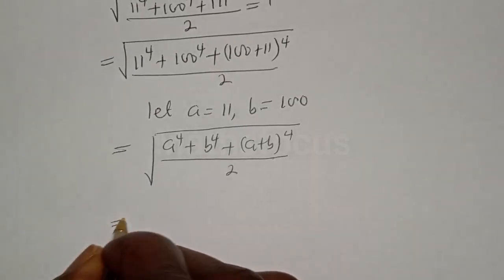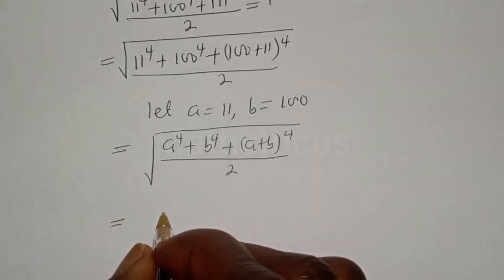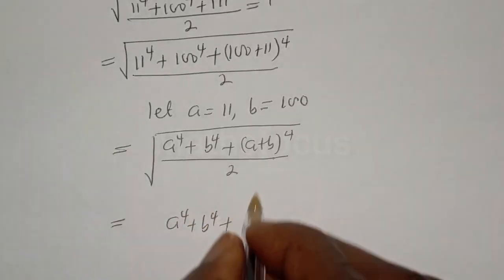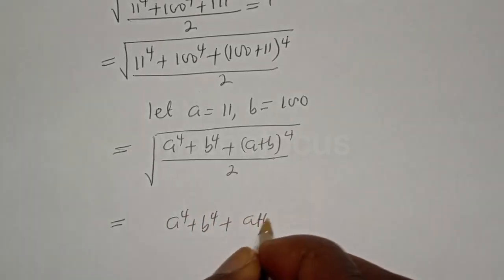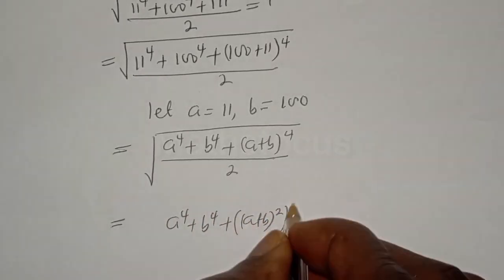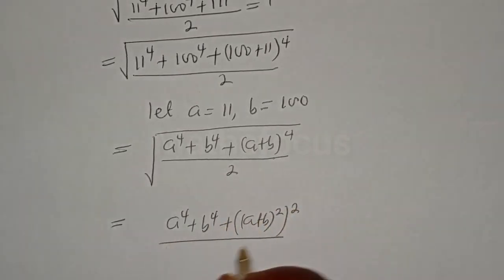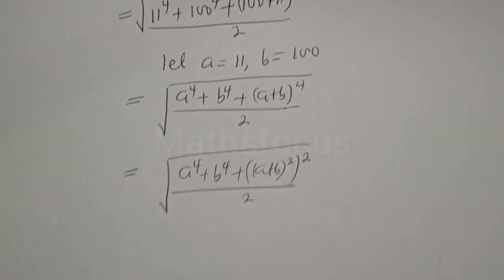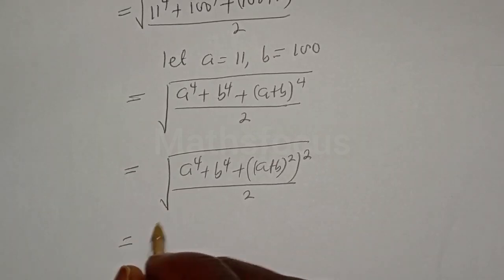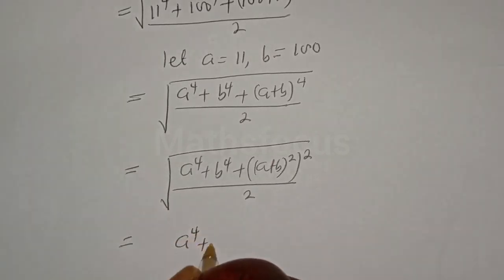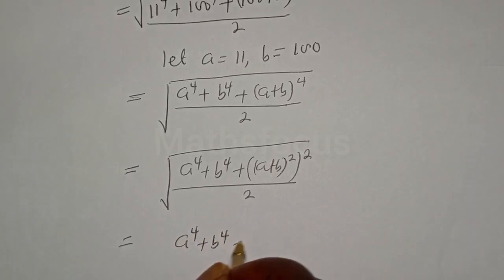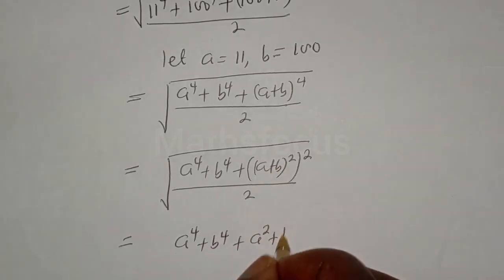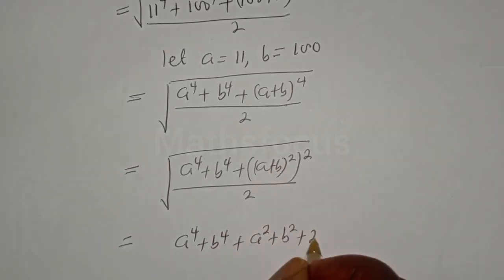This is equal to a⁴ plus b⁴ plus (a plus b)⁴ over 2. Now expanding (a plus b)⁴, we get (a² plus b² plus 2ab) squared.